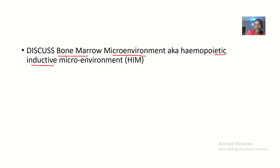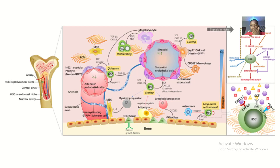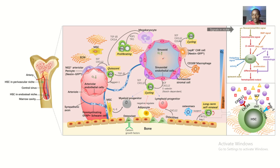If you say bone marrow microenvironment or hematopoietic inductive environment, it's more like asking: what is this environment in the bone marrow that is trying to actually support hematopoiesis? It's trying to support blood cell formation. And this is what a bone marrow microenvironment looks like.